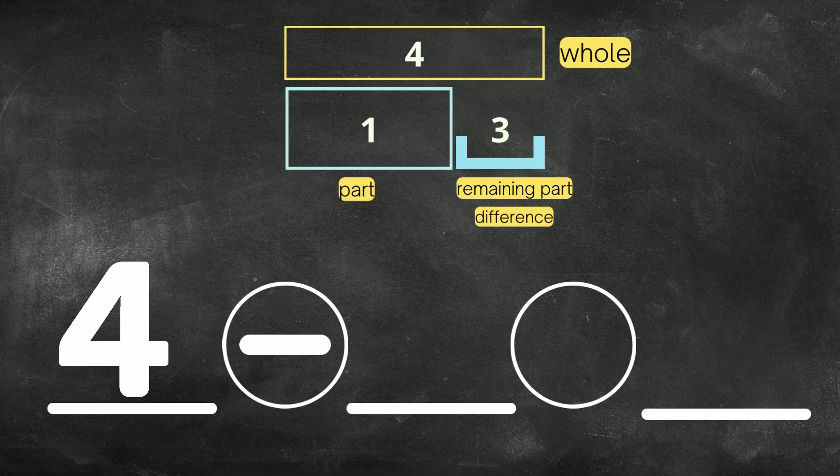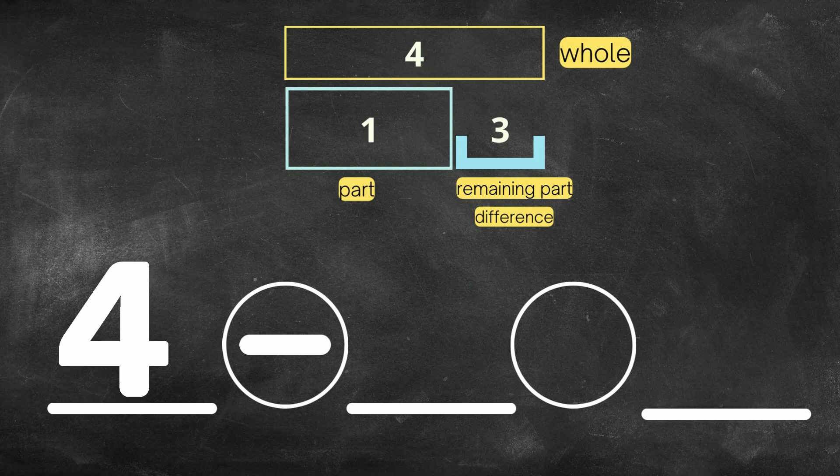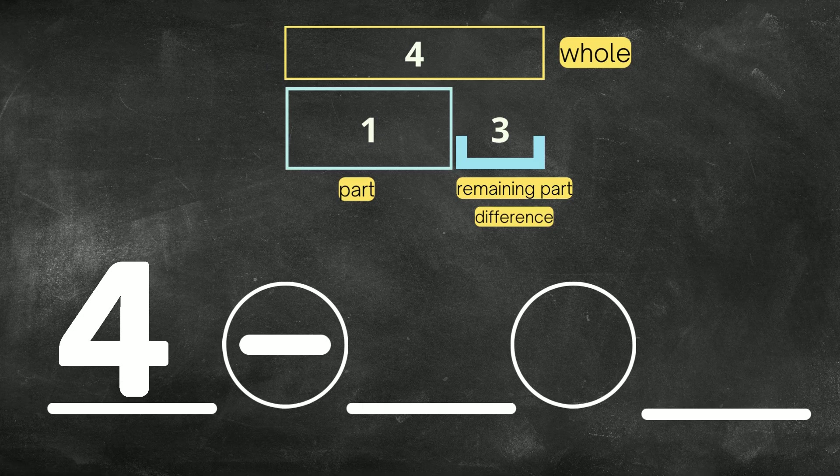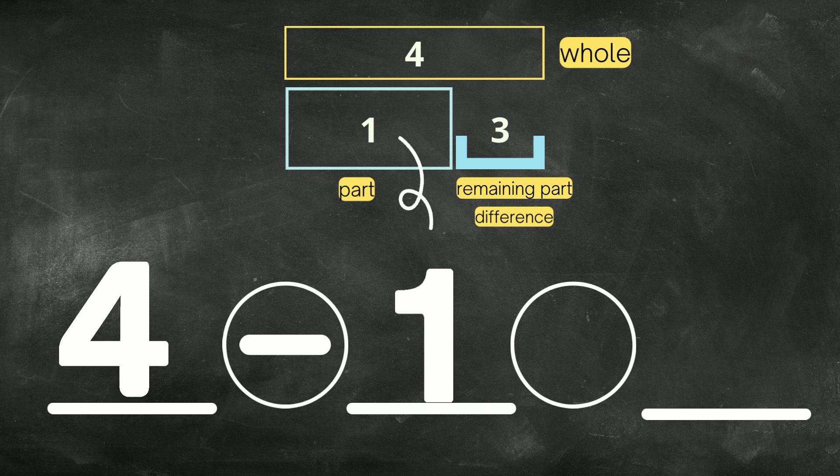Now I have 4 minus. 4 minus what? How many ran away? How many bunnies ran away? What am I taking away from this 4? Yes, I'm taking away 1, that part, the 1. So I'm going to go ahead and put that 1 right here after the minus sign.